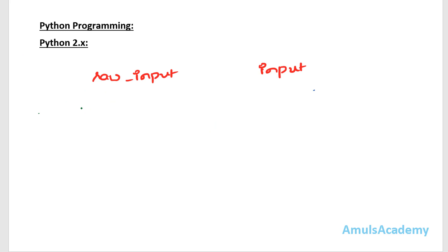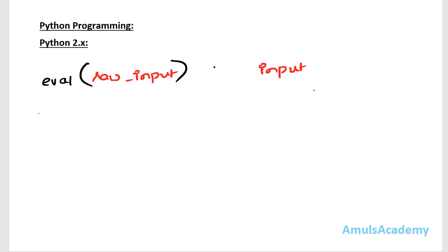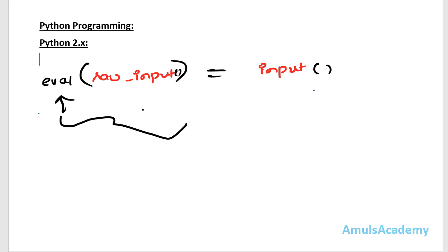So in Python 2: raw_input takes the input and treats it as a string — regardless of what type you enter. The input function evaluates the input, so if you enter an integer value it treats it as an integer. We can also say that eval(raw_input) is equivalent to the input function in Python 2.